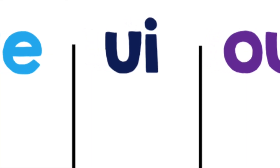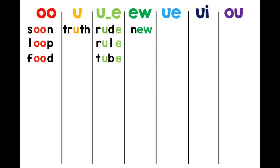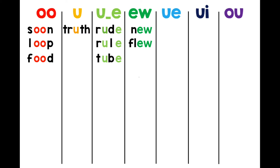OO is also spelled E-W. Let's start with new: N-E-W. Flew: F-L-E-W. And drew: D-R-E-W.